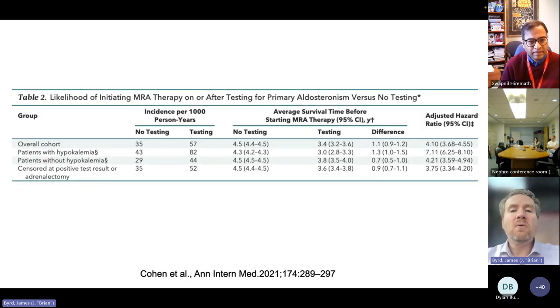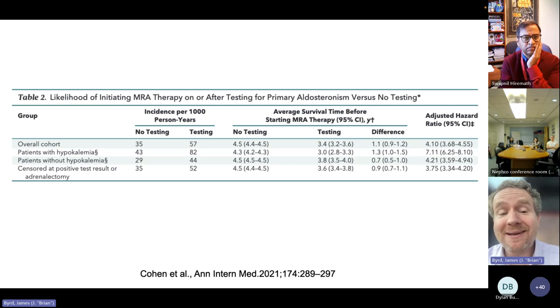Then we asked the question, could it be that people are simply bypassing testing and just treating with a mineralocorticoid receptor antagonist? What we found was that essentially if they were tested, there was a fourfold higher likelihood that they would be started on a mineralocorticoid receptor antagonist. So it looked like it wasn't just people skipping mineralocorticoid receptor antagonists, but rather that they were skipping that and testing and treating basically.